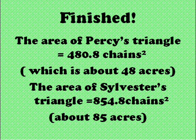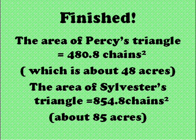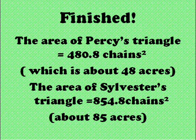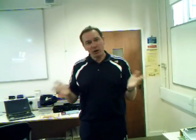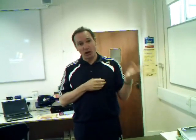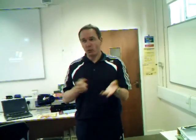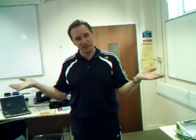So the area of Percy's field is 480.8 chains squared, and the area of Sylvester's field is 854.8 chains squared. Okay, what I don't understand is when I was at school, an area of a triangle was half base times the height. So why do you use a half BC sine A? I just don't get that. That's strange to me.